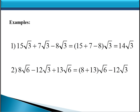In example 2, notice that we have 3 terms but only 2 of them are like radicals: 8 square roots of 6 and 13 square roots of 6. We can add those together by adding the 8 and the 13, giving us the total number of square roots of 6. However, the minus 12 square roots of 3 stays exactly the same — it cannot be combined with the other two because it's not a like radical. 8 plus 13 is 21, so our final answer is 21 square roots of 6 minus 12 square roots of 3.